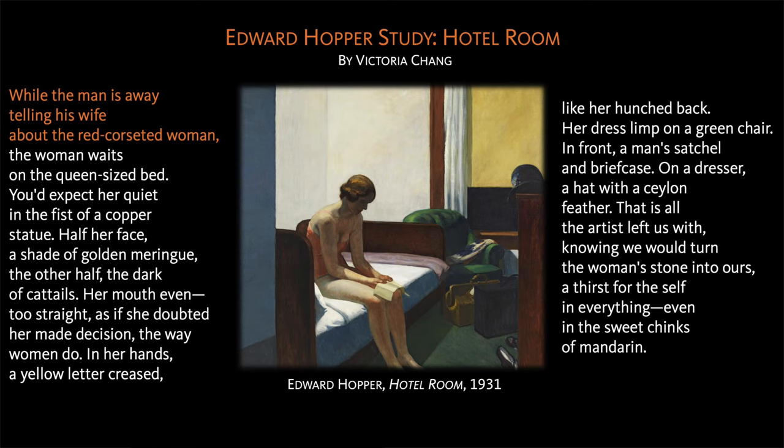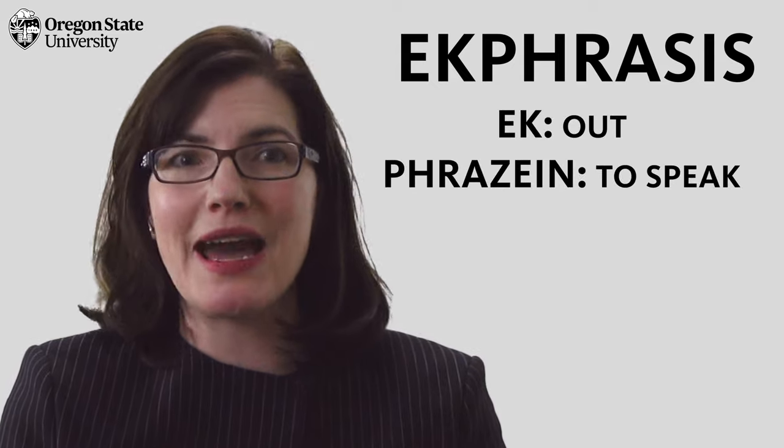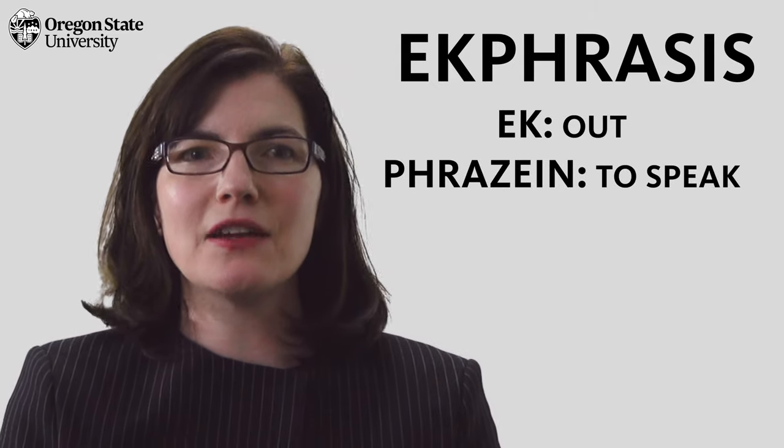But the poem does not just catalogue the features of the painting. It also interprets the image, as we see from the very start: 'while the man is away telling his wife about the red corseted woman.' Etymologically, ekphrasis means to speak out, and here the poet tells us what the painter leaves unsaid.